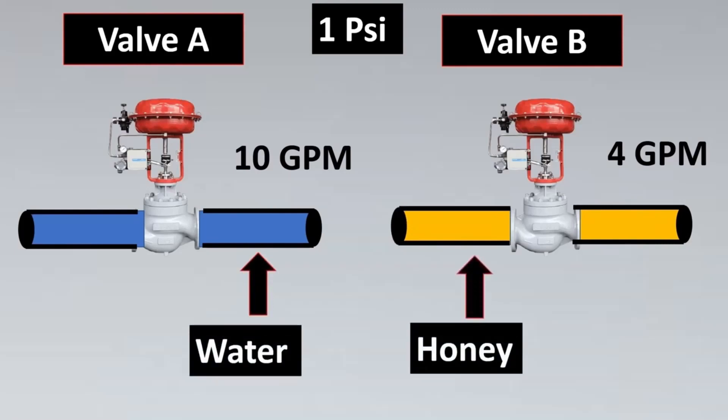So here if we want to compare two valves' flow capacity we have to keep them under the same pressure. So let us take a standard of 1 PSI as pressure between the two valves. Again now what I do is I'll measure the flow between the two valves but here I see the flow between the first valve was 10 GPM and the flow with the second valve was 4 GPM.